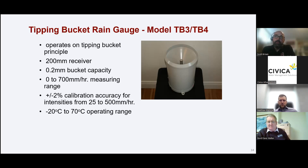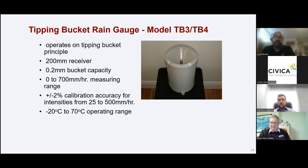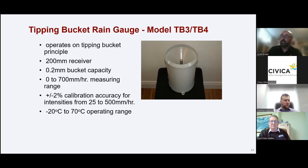The only difference between the TB3 and TB4 is the base material. The TB3 uses a polymer or aluminum die-cast base — solid aluminum die cast — while the TB4 uses a UV-stabilized PVC base. Everything else about the TB4 is the same as the TB3. Calibration, flow, and siphoning all operate on the same principle.